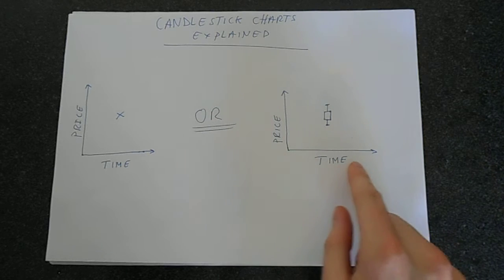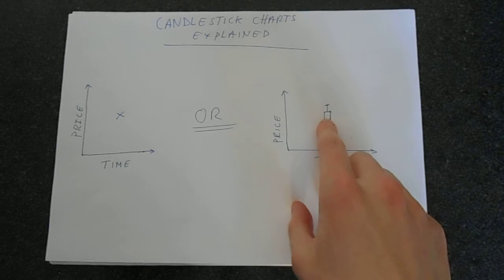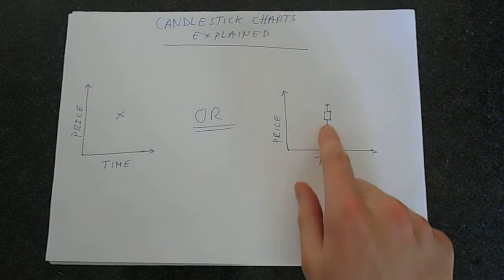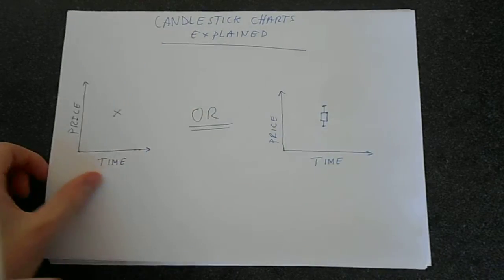So we could do this. So at some particular time, say the 4th of August, this could represent what's went on with the stock. So we can convey several data points using this drawing here. So let's see exactly what this drawing means.